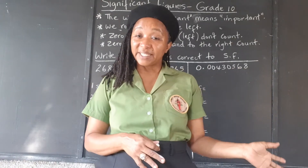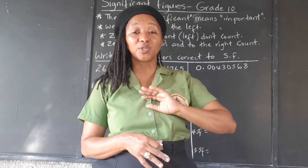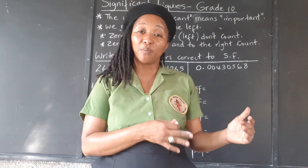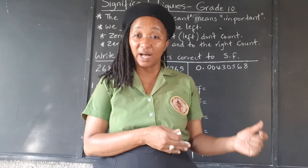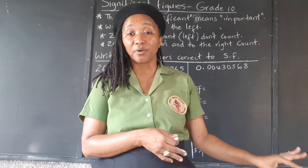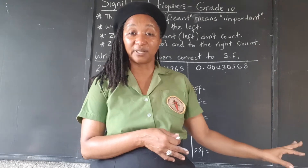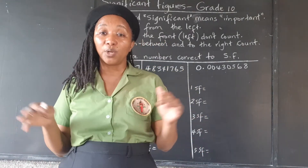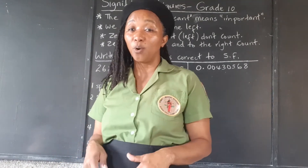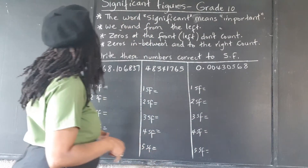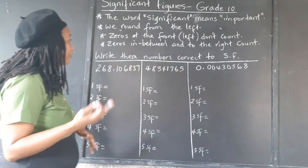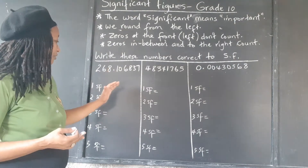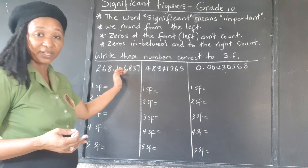We're going to be calling upon the zero a lot when we're doing significant figures. Whatever is not considered significant for this moment, the zeroes will come in and hold their place for the whole numbers. If it's a decimal, the decimal part of it, we're just going to ignore everything else. We round from the left — we start from the left, from the whole numbers, or from the left of the decimal.